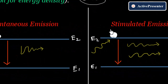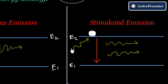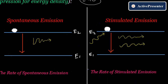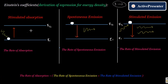In the third case, stimulated emission: after stimulating the electron using photon or electric stimulation, the electron comes back from E2 to E1, emitting two extra radiation photons. This process is called stimulated emission.